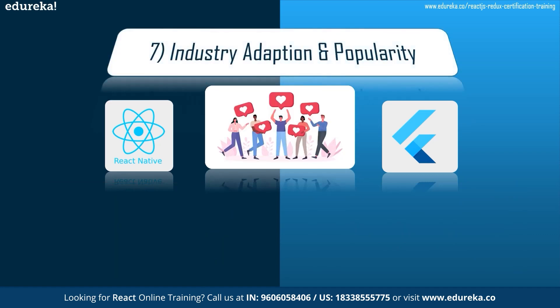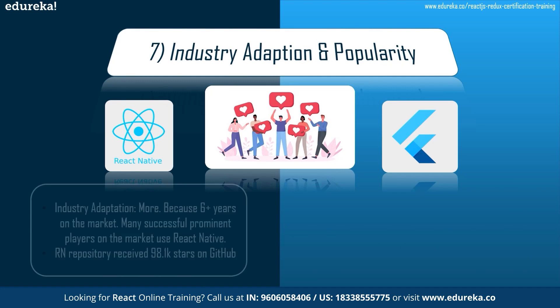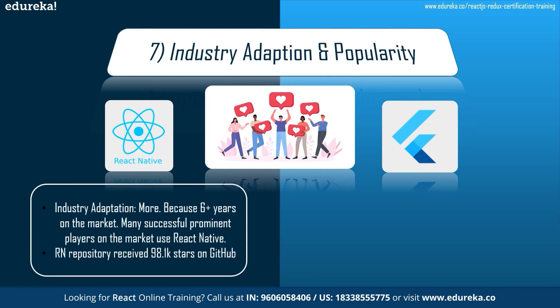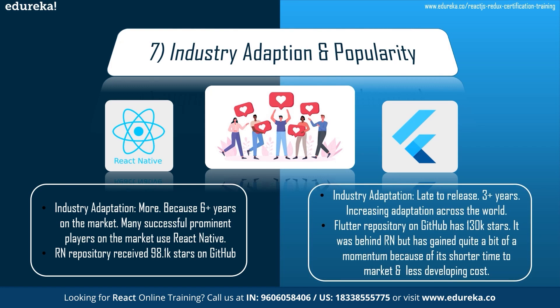Next: industry adaptation and popularity. Since React Native came out two years before Flutter, many successful prominent players on the market use React Native to build apps. React Native's repository on GitHub has received 98.1 thousand stars. Flutter was late to the party, but it has been seeing increasing adaptation across the world. Flutter's repository on GitHub has reached a whopping 130,000 stars, surpassing React Native, and has gained quite a bit of momentum because of its shorter time to market and lower development cost.